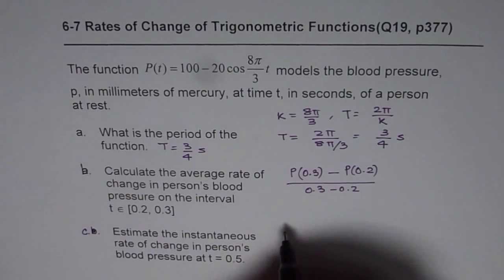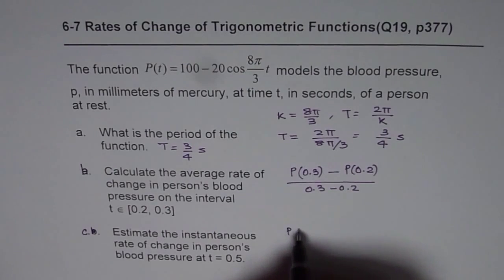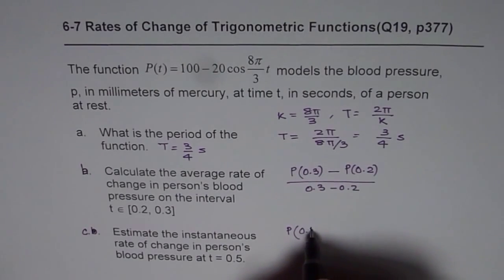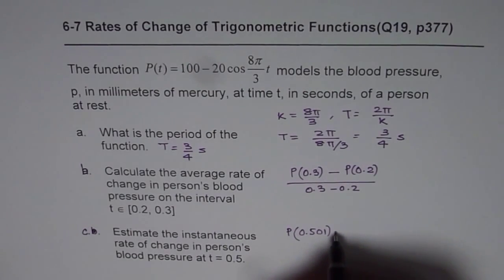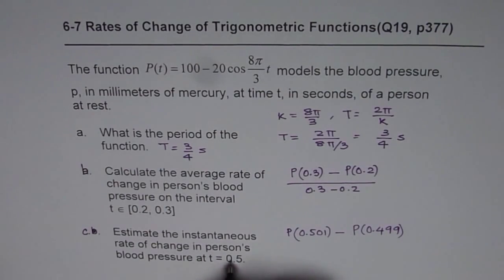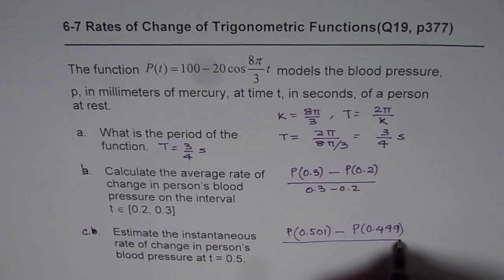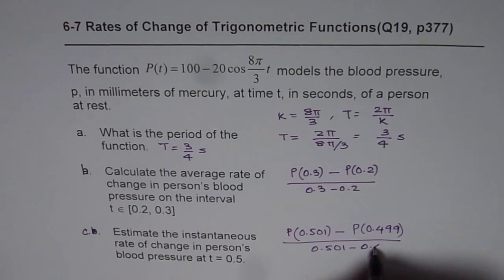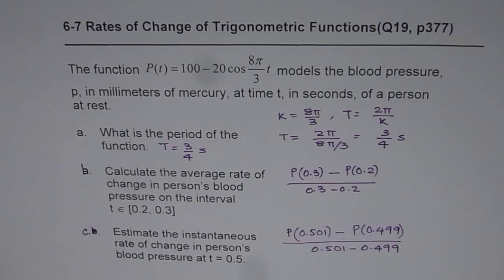So in that case, what we can do is find P of a point which is 0.01 to the right, let's say 0.501, minus P(0.499), divided by 0.501 minus 0.499. So that should give you the answer for this particular question.